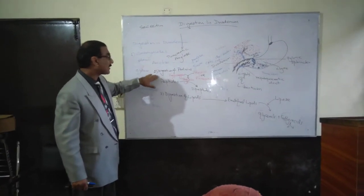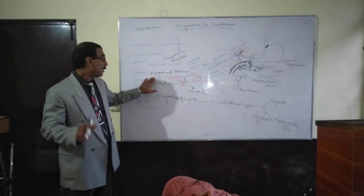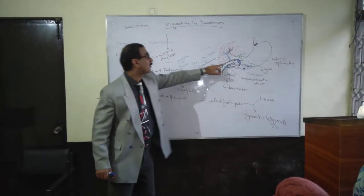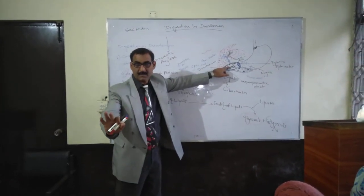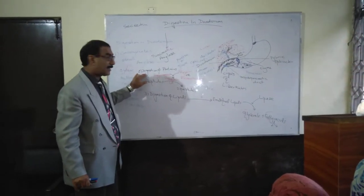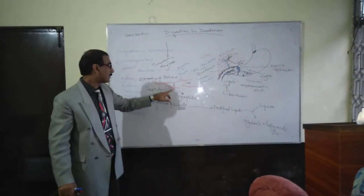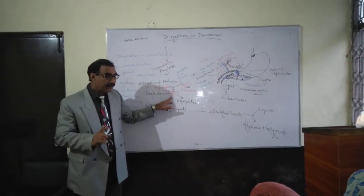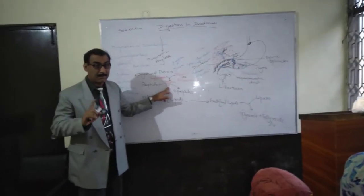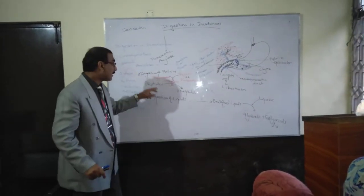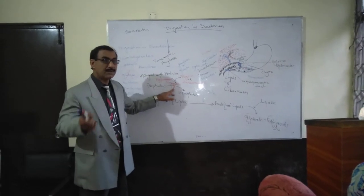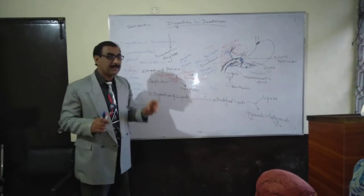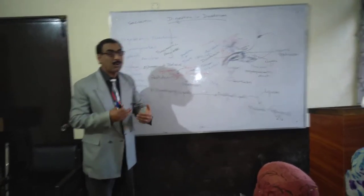In the next stage, we are going to discuss the digestion of proteins in the duodenum. The proteins are acted upon by trypsin, which comes from the pancreas. Trypsin comes into the duodenum in the form of trypsinogen, an inactive form that cannot act upon proteins directly.